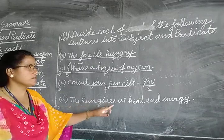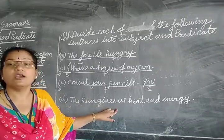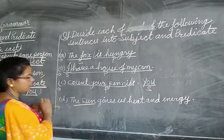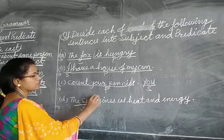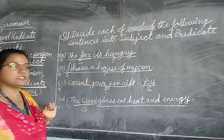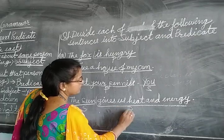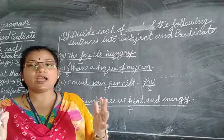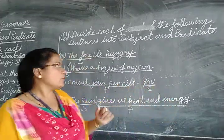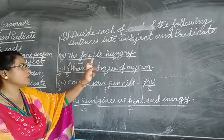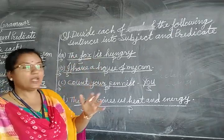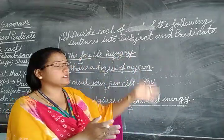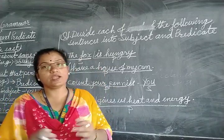Next: 'The sun gives us heat and energy.' What we are talking about? We are talking about the sun — so 'the sun' is the subject. What we are saying? 'Gives us heat and energy' — that is the predicate. So dear children, you have to divide subject and predicate. You can write: subject — 'the fox,' predicate — 'is hungry.' Or you will have columns: under the subject column write the subject, and under the predicate column write the predicate.